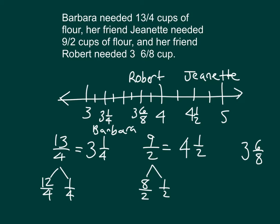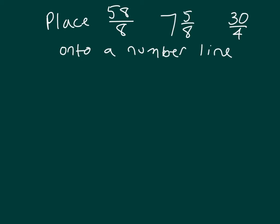In some instances, we really should be putting these so that they are the same as they were given to us with the 13 fourths that was given to us and also the 9 halves. We did have to convert them to make it easier to place them onto the number line. We made them all mixed numbers, so it would be easier to see.